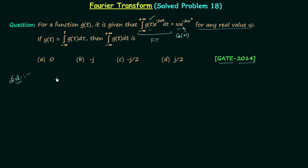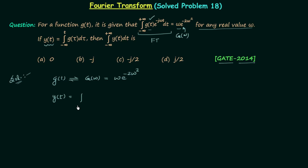We have a time domain signal g(t), and g(t) has the Fourier transform G(ω). It is given in the question that G(ω) equals ω multiplied by e^(-2ω²). It is also given that there is a signal y(t) which equals the integration from minus infinity to t of g(τ) dτ.